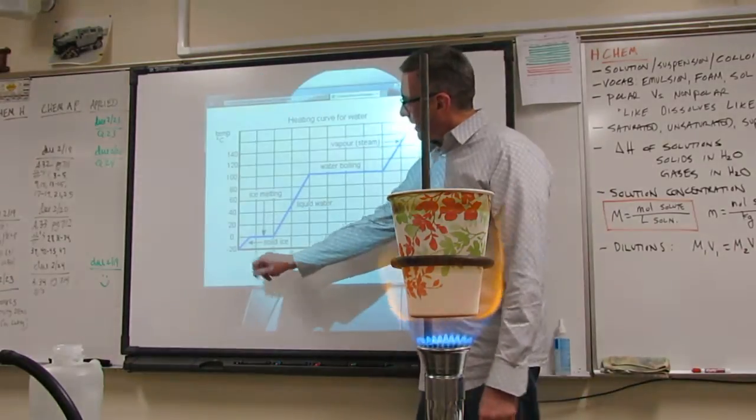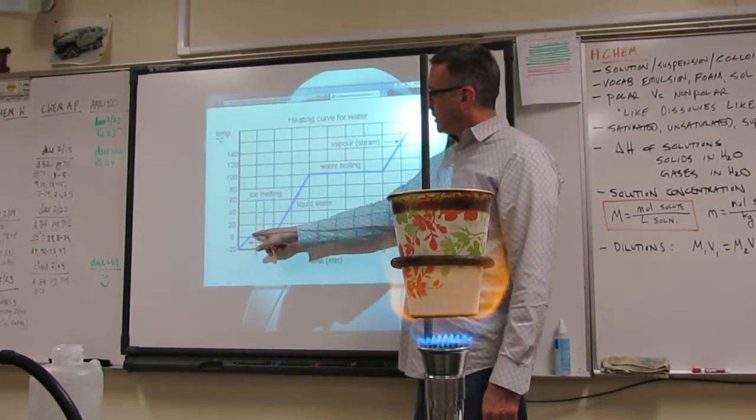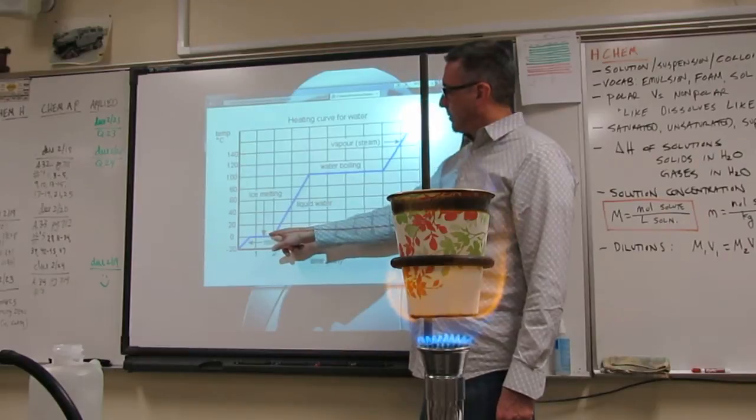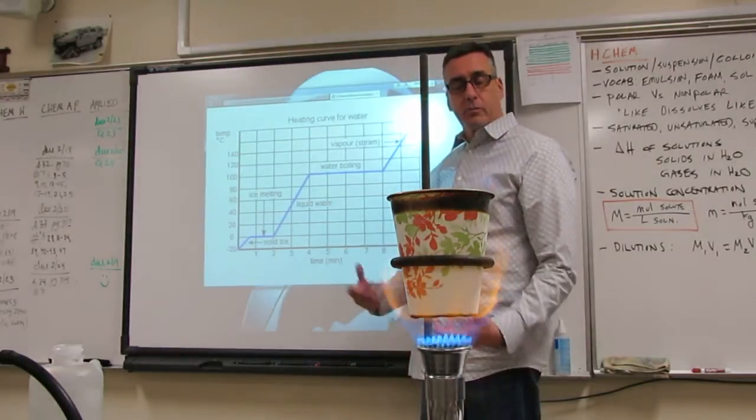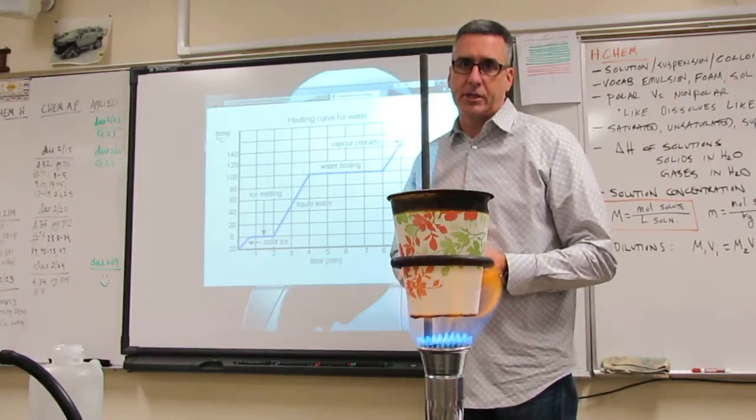As I add heat to the ice, the temperature is going to rise to no one's surprise. Yet when it reaches zero degrees Celsius, even though I add heat, the temperature remains constant. We're going through a phase change. When you go through a phase change, temperature does not change.